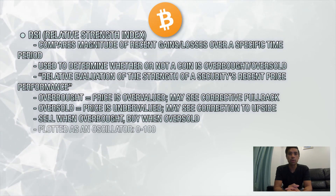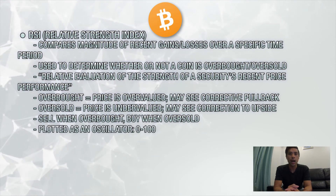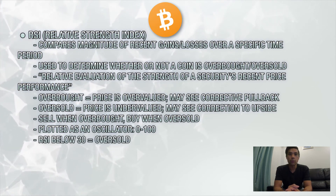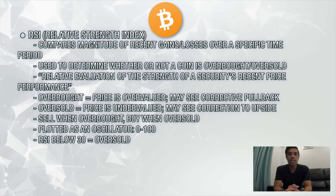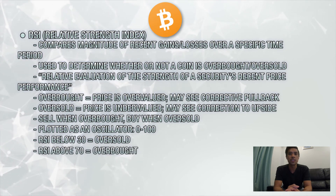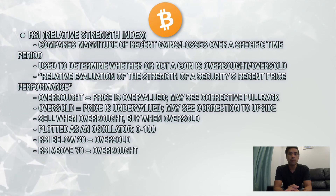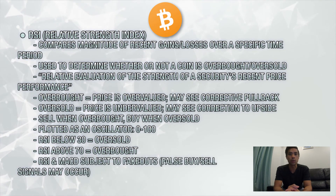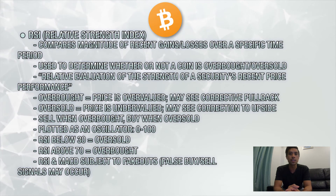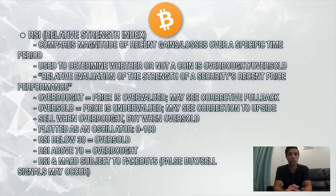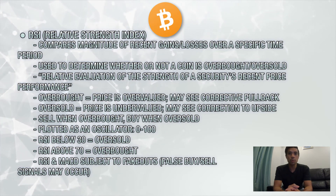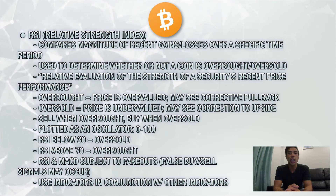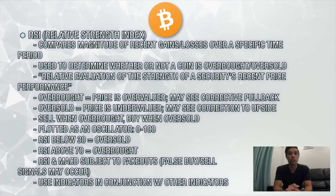RSI is plotted as an oscillator whose values range from 0 to 100. Generally, when RSI reads below 30, the coin is considered oversold, and when it's above 70, it's overbought. Keep in mind that both RSI and MACD can be subject to fakeouts, meaning false buy or sell signals may occur. That's why it's extremely important to use these indicators in conjunction with other indicators in order to give yourself a better read on the situation.